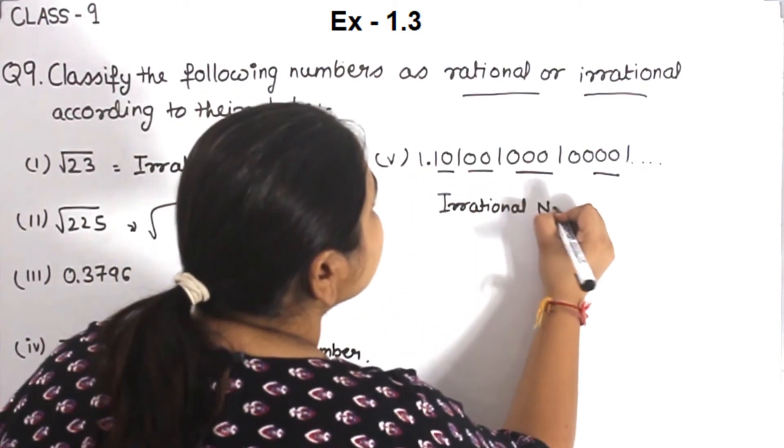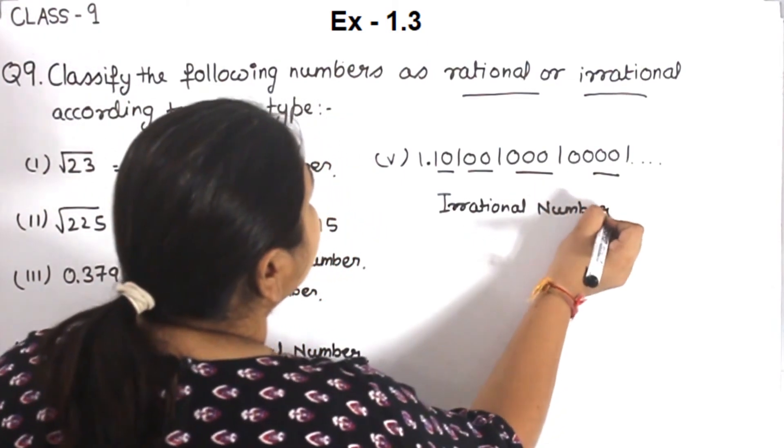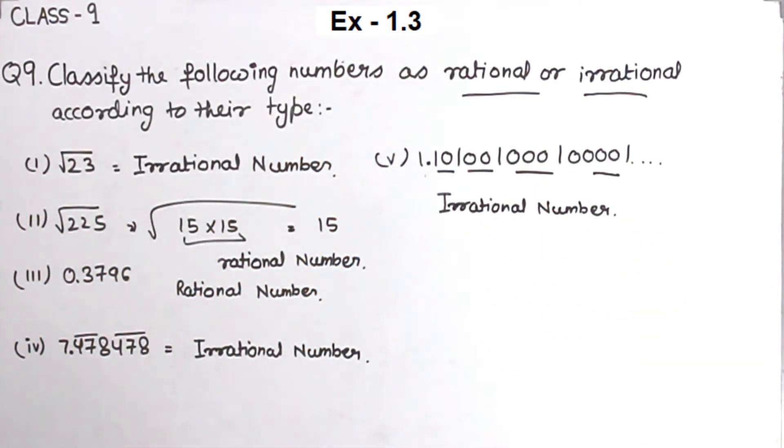So part 4 is an irrational number. This is the solution of question number 9.